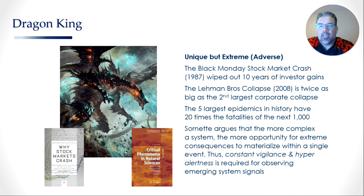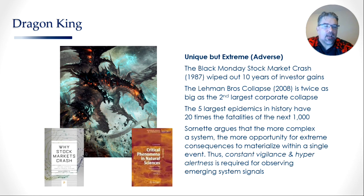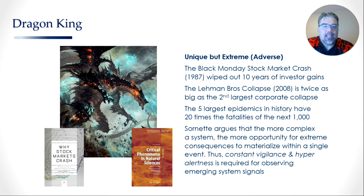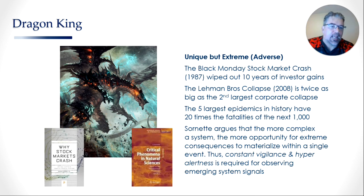The next concept is the dragon king. It has been around a while and was made popular by Didier Sornette, who has written extensively on the topic, mainly in terms of economic and financial crashes. Essentially, a dragon king is a unique but extreme event — it's a dragon because it's highly unique, and a king because it's top of the food chain, the biggest of its kind. For example, the Black Monday stock market crash of 1987 wiped out 10 years of investor gains in a single day. The Lehman Brothers collapse of 2008 was twice as big as the second largest collapse of all time. The five largest epidemics in history have 20 times the fatalities of the next 1,000 — a dragon king is this big, once-in-a-generation event that can never be easily duplicated.